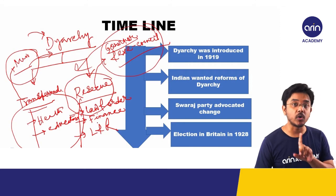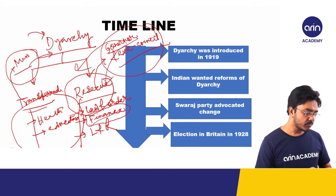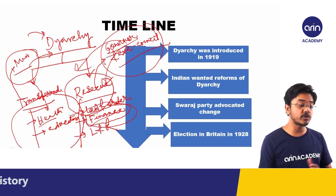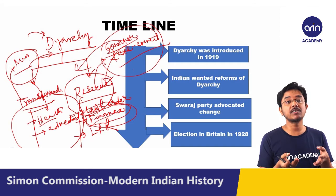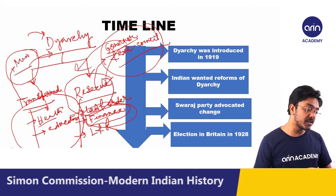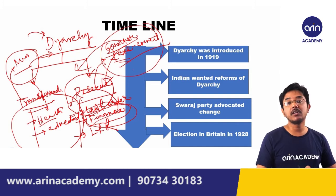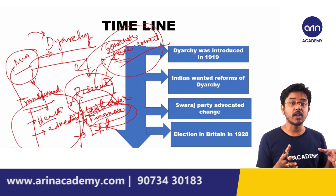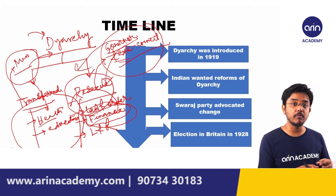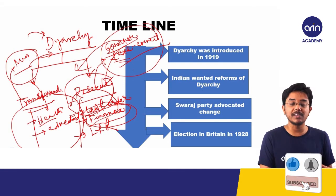This was basically an eyewash. Finance was under the control of the governor. Suppose ministers tried to make new laws on health or build new hospitals — they would require finance, but finance was under the governor, who was not responsible to the legislature and who took decisions arbitrarily. So even if ministers initiated a good welfare scheme, finance would not be sanctioned. That's how diarchy was just an eyewash, and Indian nationalist leaders strongly opposed the diarchy system.